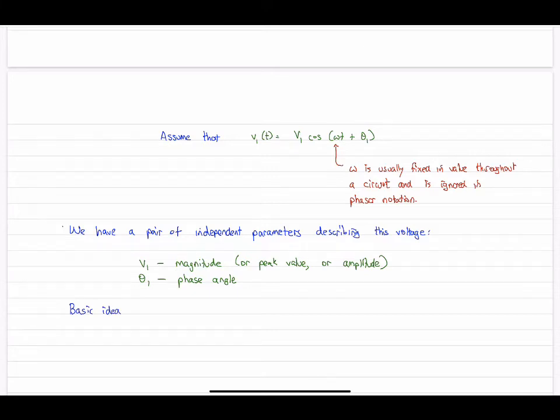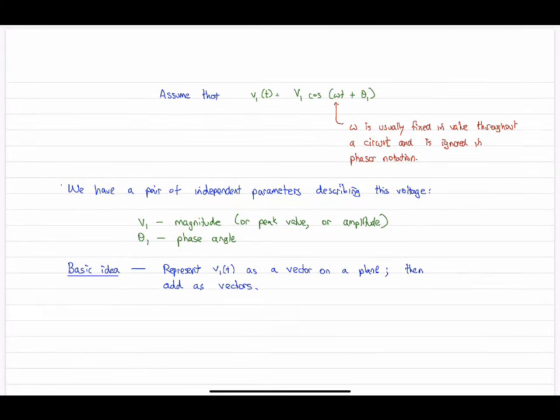So let's outline the basic idea first. So what we have is we have a magnitude V1, and we have an angle. Well, that describes a vector. And so we can draw a vector on a plane with a length of V1 and an angle of theta 1. So what we'll be doing when we're adding voltages by KVL, we're adding vectors.